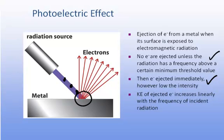If the photons had enough energy — at least the minimum energy of the electrons — then the electron would be ejected from the surface of the metal. But if the photon did not have enough energy, it didn't matter how long they showed the light or with what intensity; the electron would not be ejected.